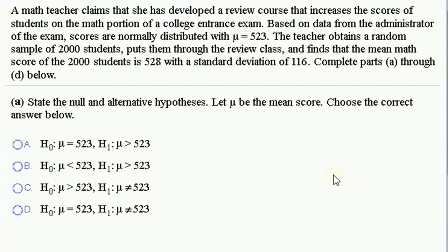A math teacher claims she has developed a review course that increases the scores of students on the math portion of a college entrance exam. Based on data from the administrator of the exam, scores are normally distributed with a μ of 523. The teacher obtains a random sample of 2,000 students, puts them through the review class and finds the mean math score of those 2,000 students is 528, with a standard deviation of 116.